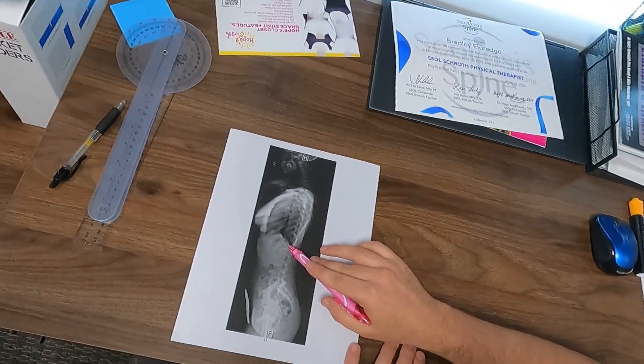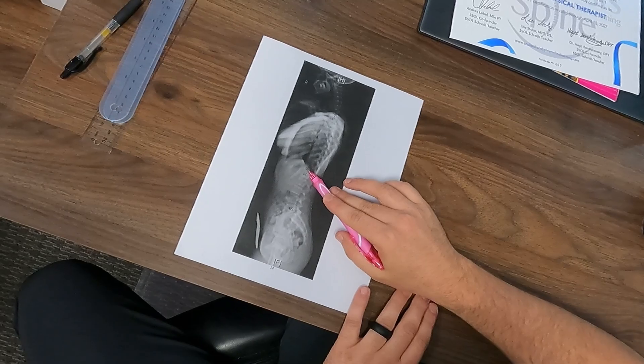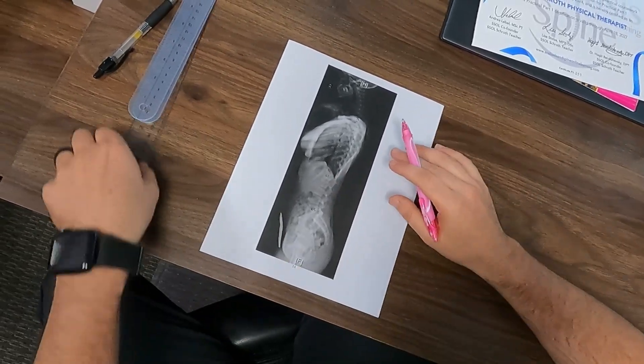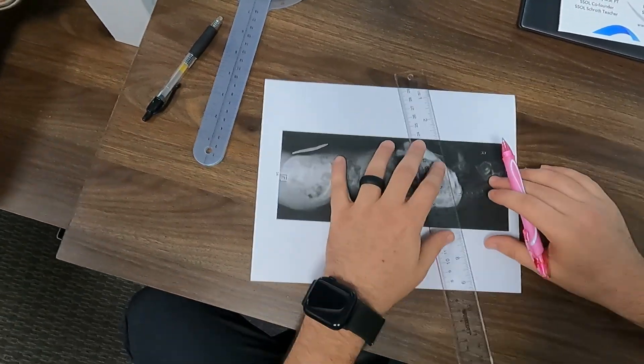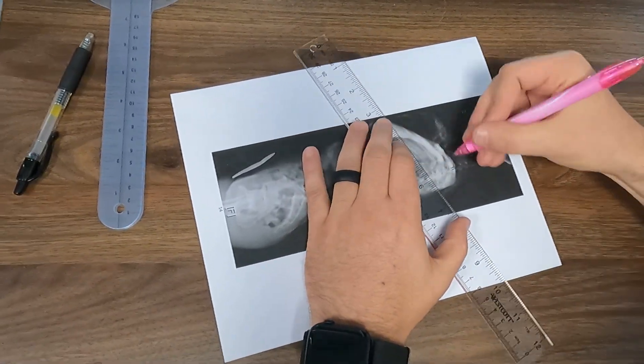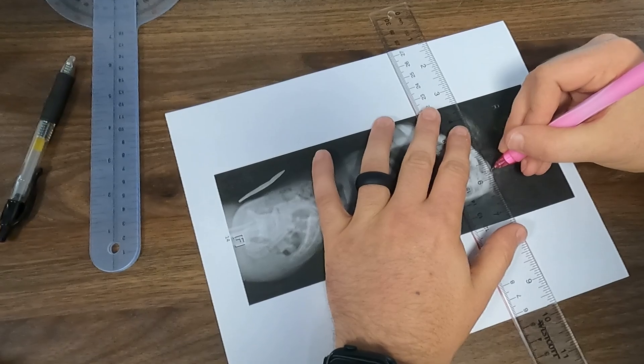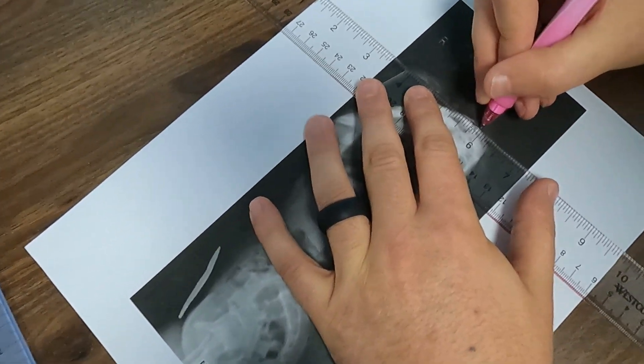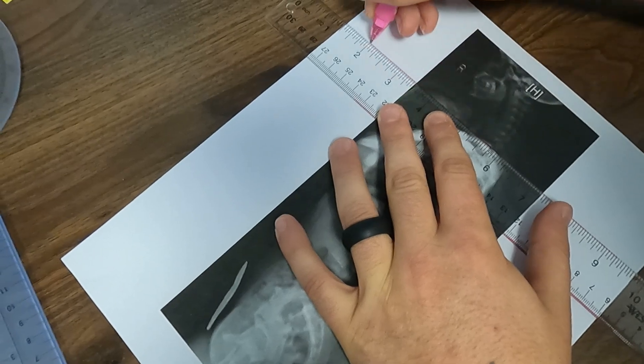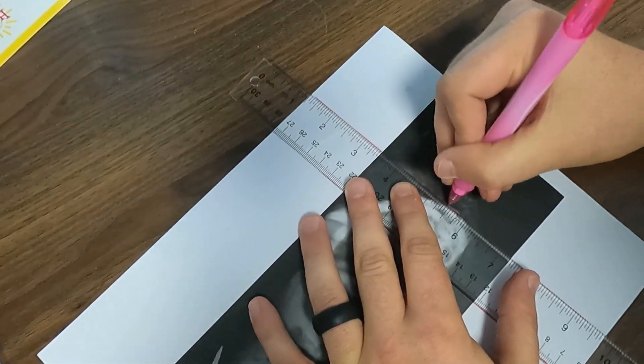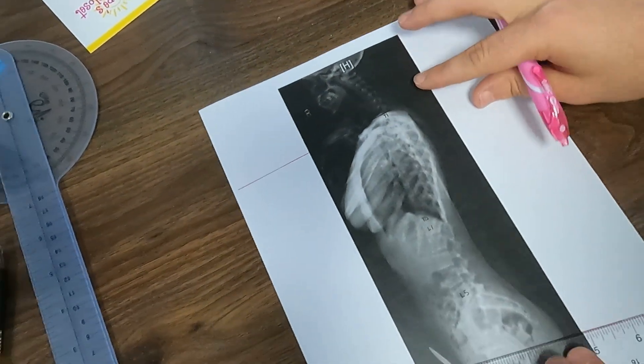The next location you want to look at and find is T12. Once we find these two, we can take our ruler just like last time and we're going to follow along the upper end vertebrae of T1. So I've kind of cheated and already started that here. We want to take that line out as far as needed.